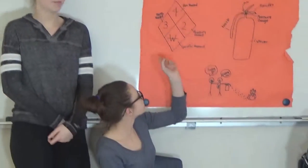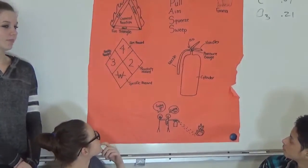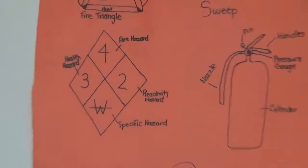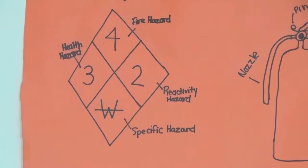This is a 7-1-0 diamond. The 4 is for Fire Hazard. The 2 is for Reactive Hazard. The W, the line through it, is for Specific Hazard. And number 3 is for Health Hazard.